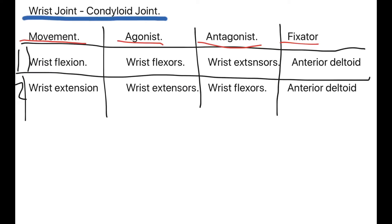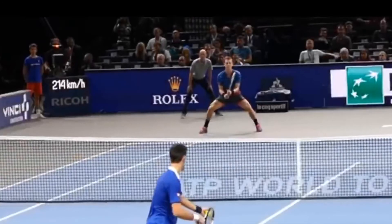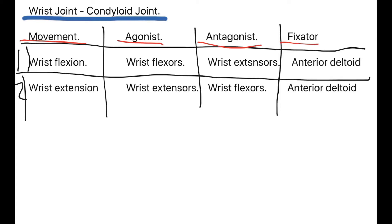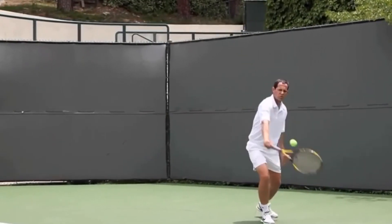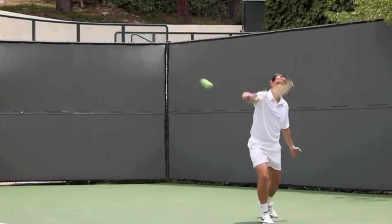Moving on to the wrist joint, which is a condyloid joint, though you only need to know about wrist flexion and wrist extension here. The agonist for wrist flexion is the wrist flexors and the antagonist is the wrist extensors; for wrist extension it's reversed. Both are fixated by the anterior deltoid. The best sporting example for wrist flexion is a tennis serve — you throw the ball up, hit over it, and flex the wrist to get the angle to go down into the opposite box. For wrist extension, imagine going for a backhand lob in tennis — you move your wrist under the ball and flick up to get the ball up and over the opponent.